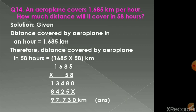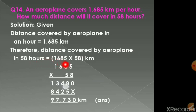Question number 14. An aeroplane covers 1,685 km per hour. How much distance will it cover in 58 hours? The distance covered in one hour is 1,685 km. Therefore, distance covered in 58 hours equals 1685 × 58. By multiplying, we get the answer as 97,730 km.